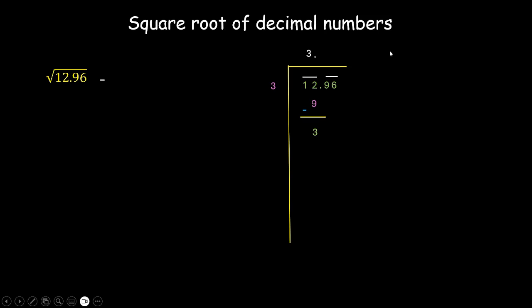Just like how we used to do, how we do with normal division when we're dividing the numbers. And then we need to bring this entire pair. Next is again, take this number, put it over here and add these two. This is 6. So now I need a number next to 6 and multiply with the same number. I should get 396 or a number less than 396.